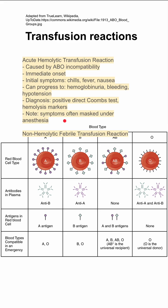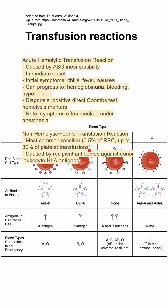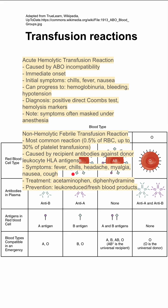Next is non-hemolytic febrile transfusion reaction. This is the most common reaction. It happens in about half a percent of red blood cell transfusions and up to 30 percent of platelet transfusions. It's caused by recipient antibodies against the donor leukocyte HLA antigens — so the previous reaction involved ABO incompatibility with RBC antigens, while this one involves leukocyte antigens. The symptoms are similar in the beginning: fever, chills, headache, myalgias, nausea, and cough. The treatment is acetaminophen and Benadryl. To prevent this, you can leukoreduce your blood products or use more fresh blood products.